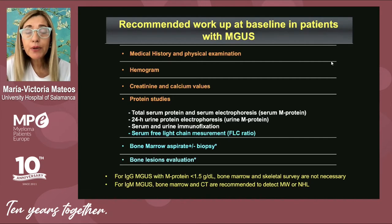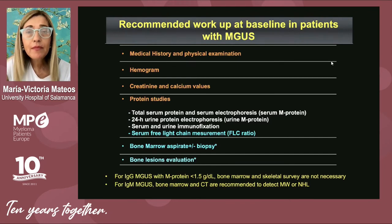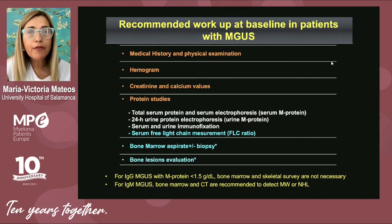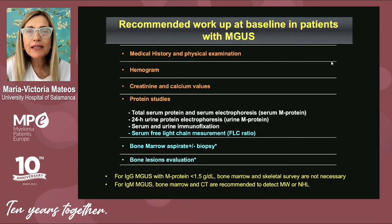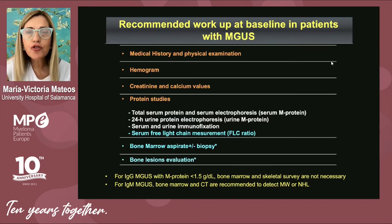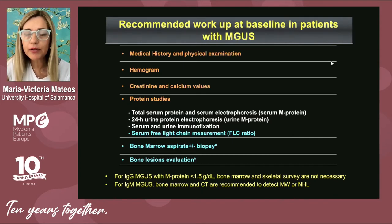An important consideration: when we diagnose monoclonal hemopathy and the M protein is lower than 1.5 grams per deciliter — a very low M component — and the type is IgG, the risk of progression to multiple myeloma is extremely low, and it would not be recommended to perform bone marrow or bone disease evaluation. Of course, this is what the guidelines recommend, but we must also consider the discussion with the patient. If the patient is young and anxious about the diagnosis, it may be appropriate to perform bone marrow and bone disease evaluation to be sure about the diagnosis.